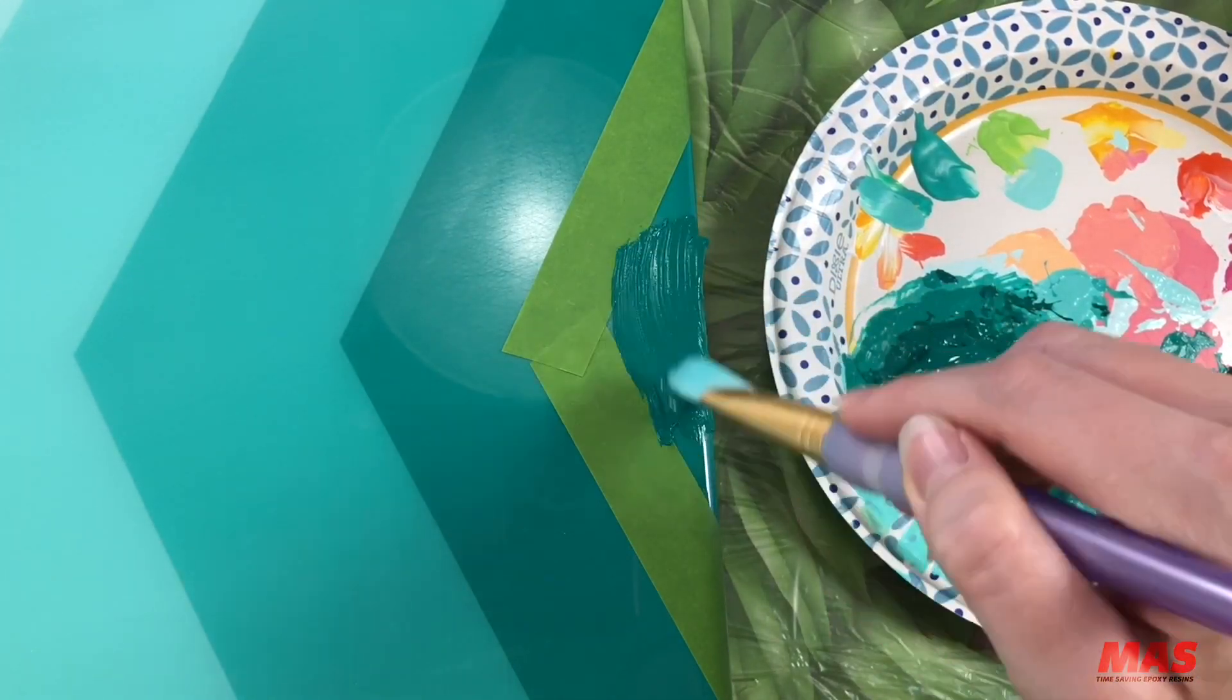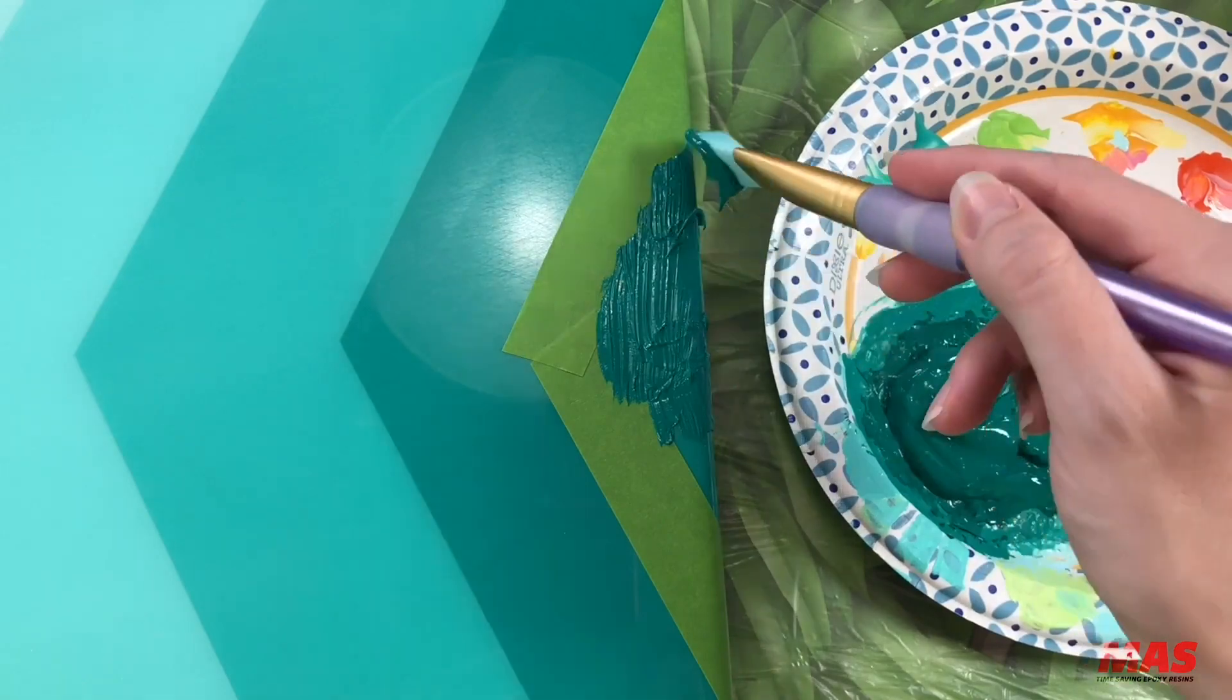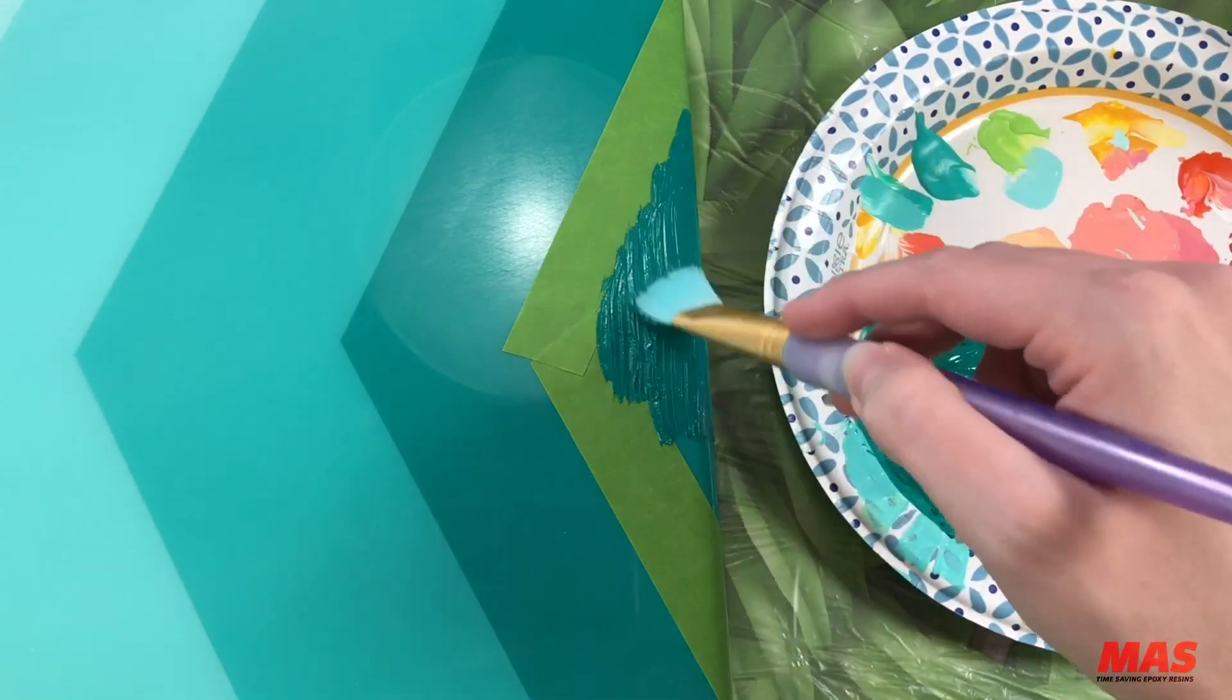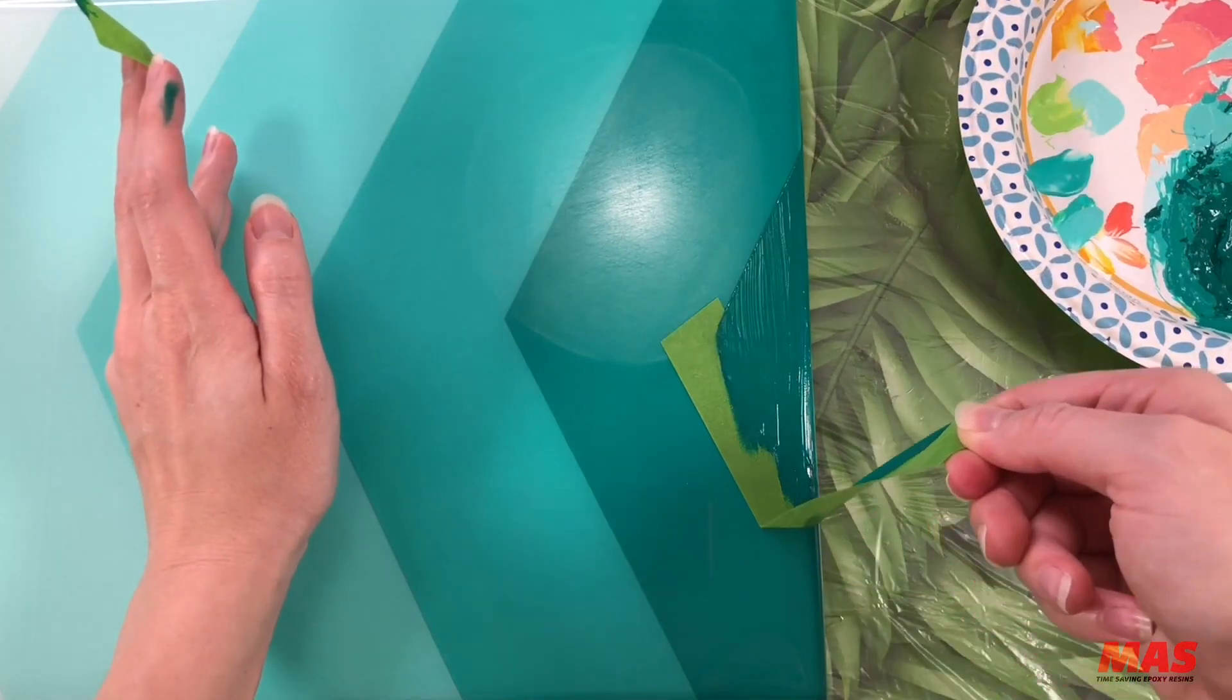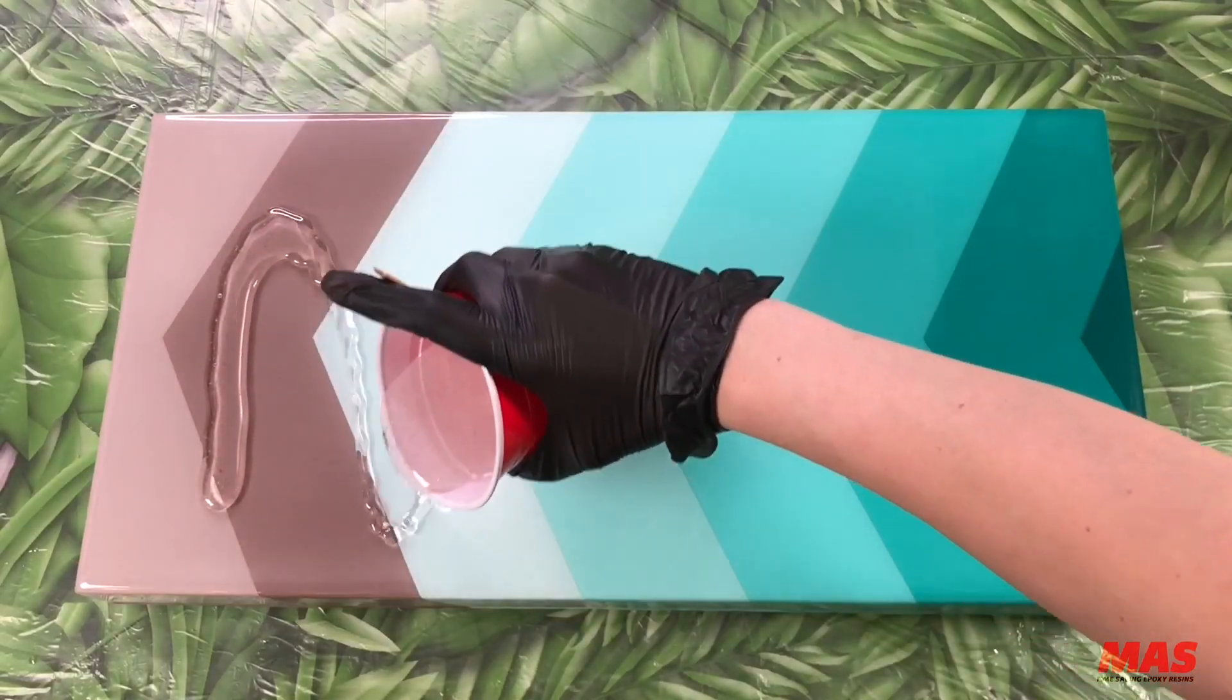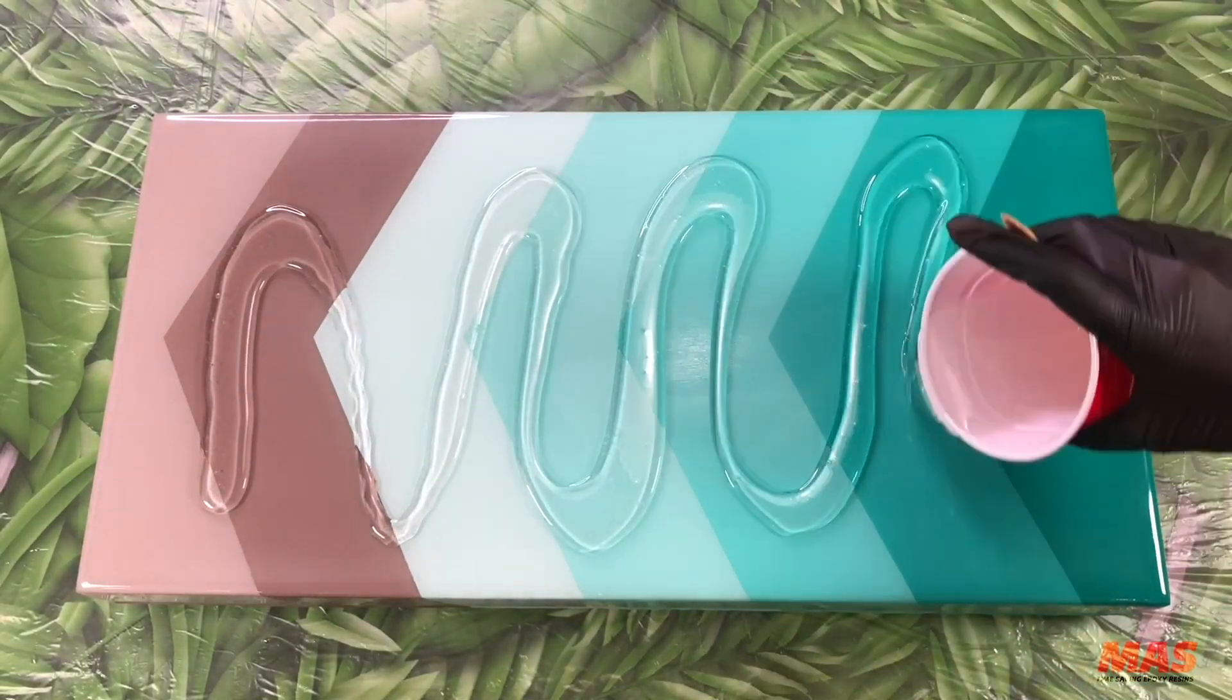We are on our last chevron of the piece and this one was so tiny it was so cute to paint. Once we remove the tape and the paint is completely dry we can add our final layer of epoxy.